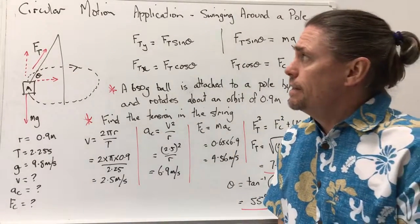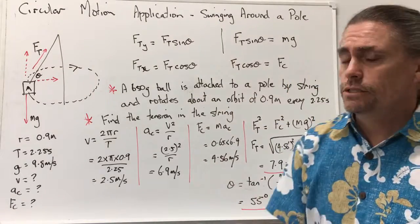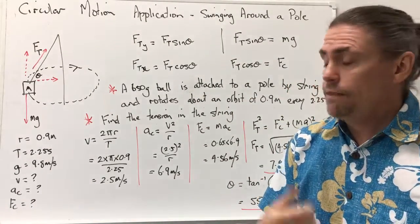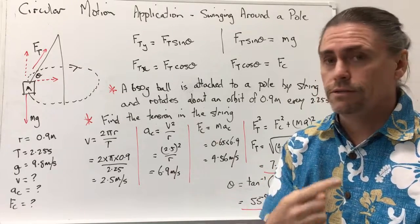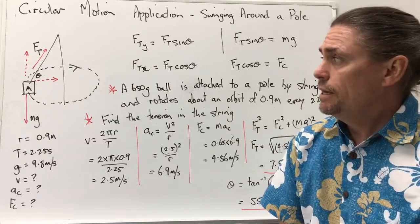Okay, let's have a look at another application of circular motion, and that's where we have an object swinging around a pole. Now that could be a ball swinging around in a game where we hit the ball around.